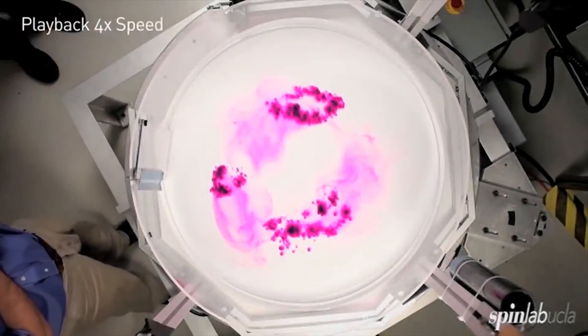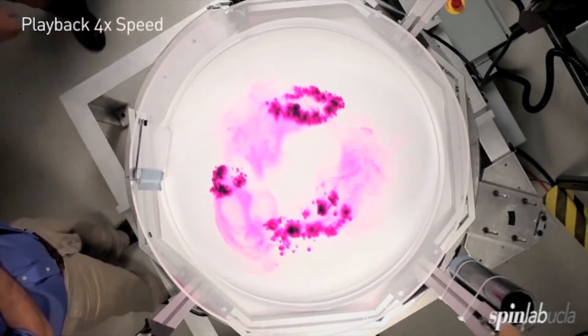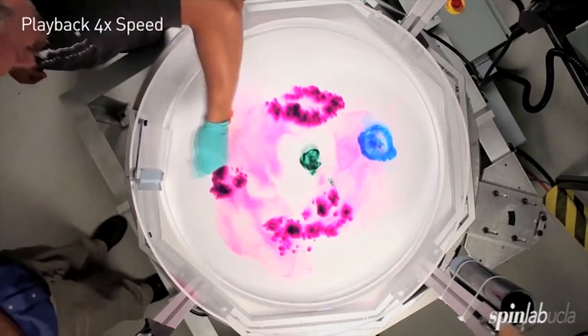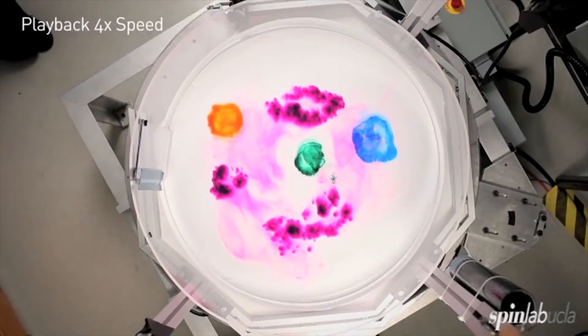So for our non-rotating experiment, we've put some potassium permanganate here at the bottom. Now we're adding some blue food coloring, some green food coloring, and some orange food coloring.